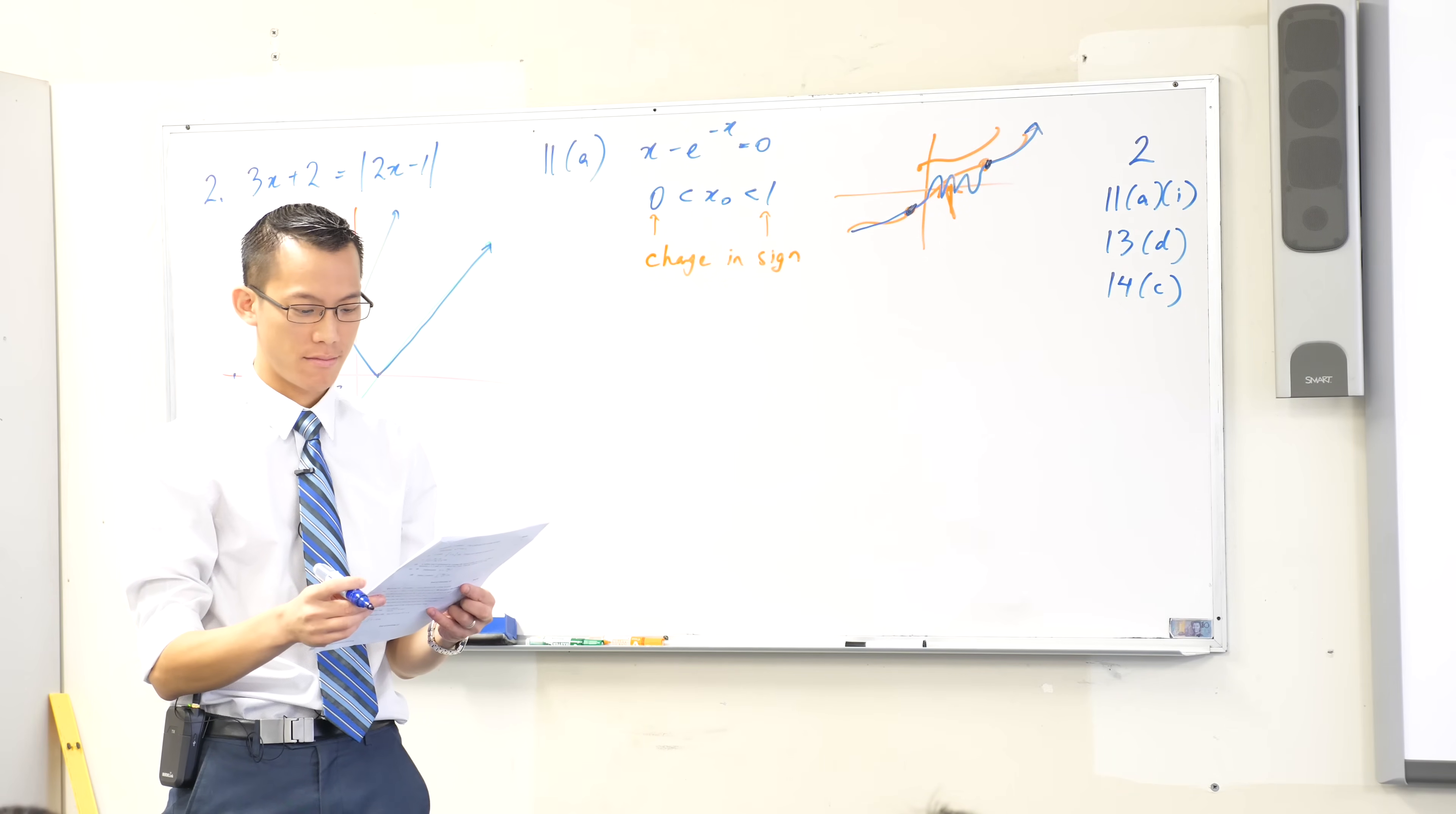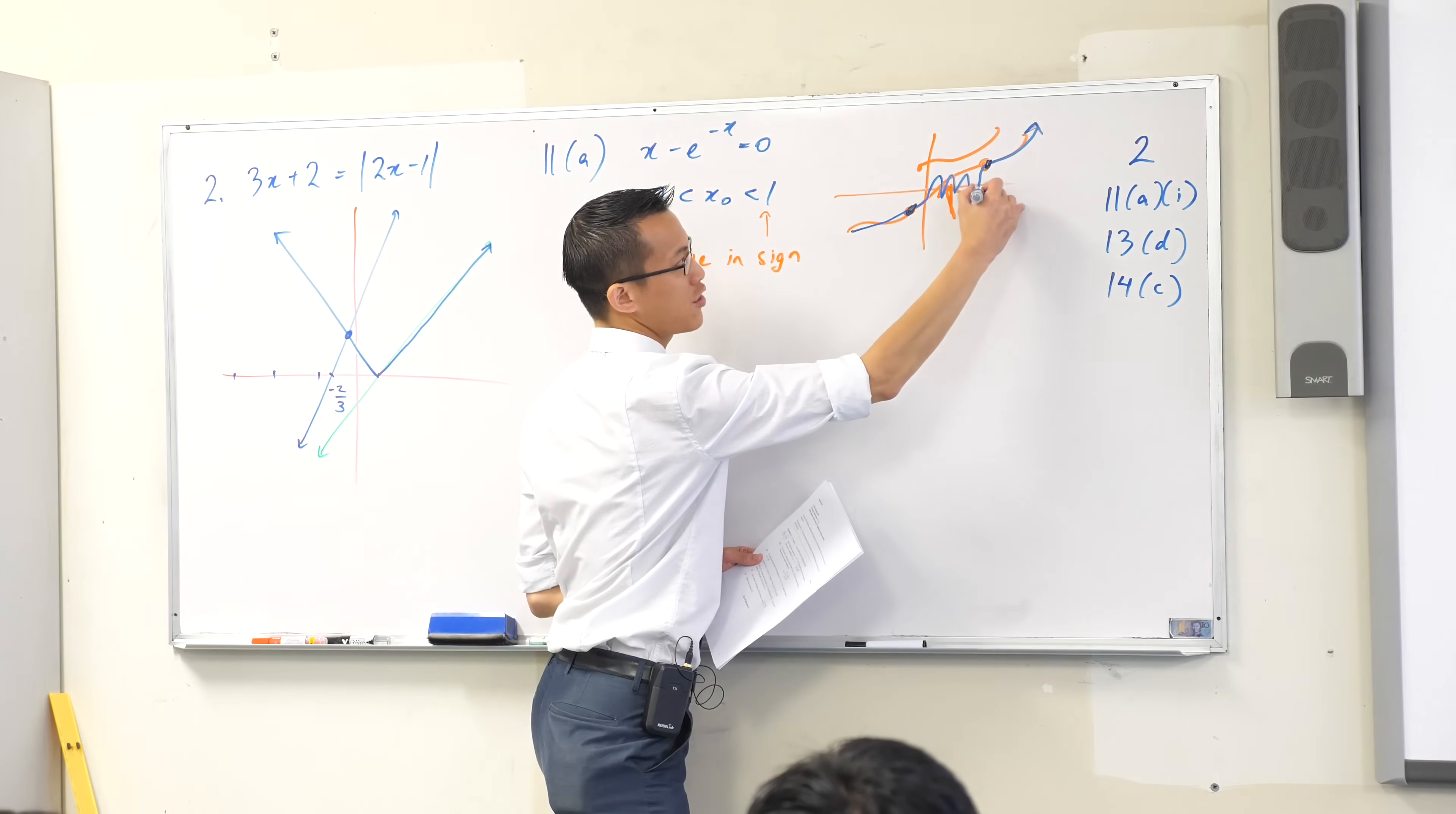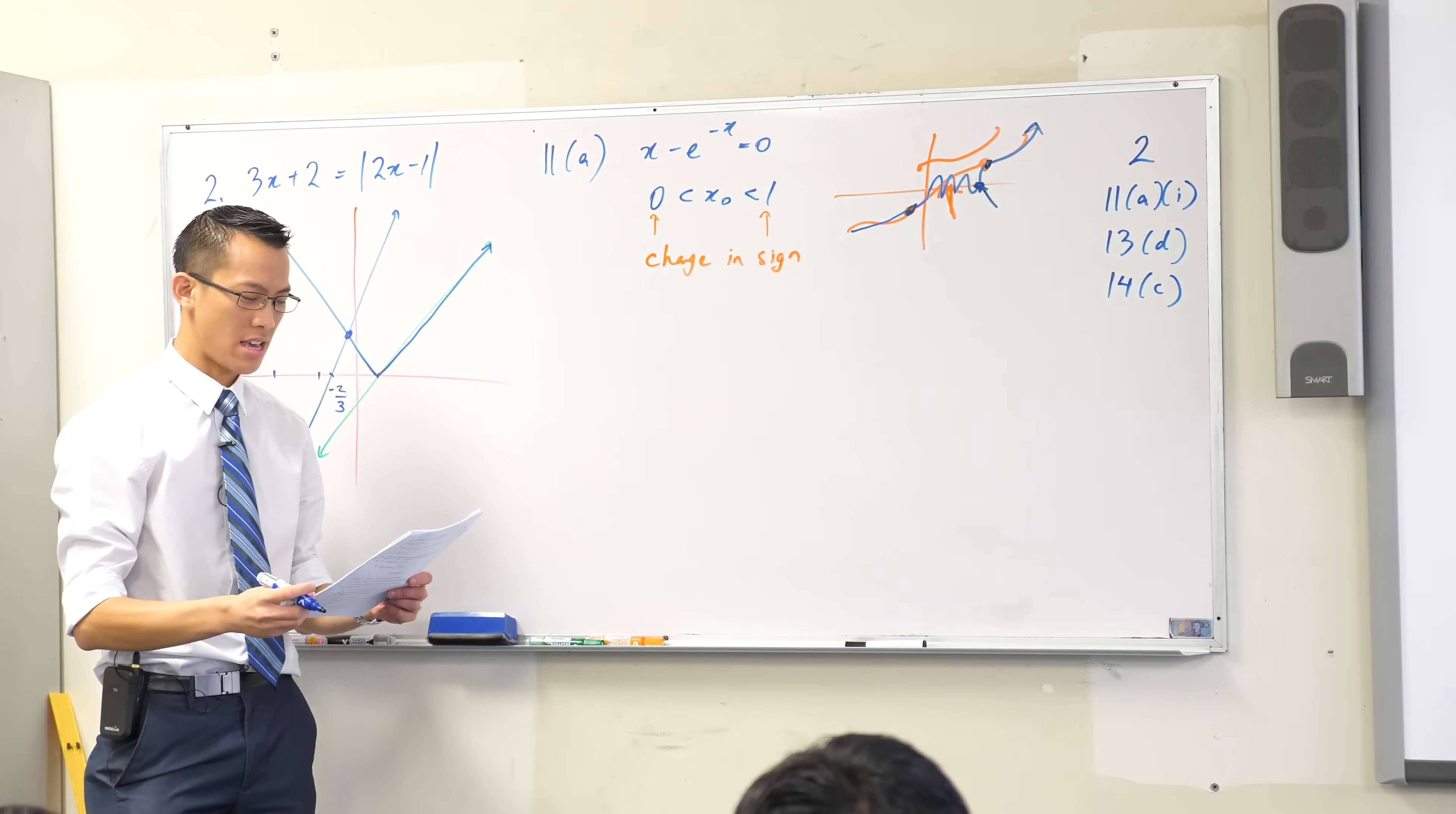I've shown there's a root, but I haven't shown there's... I heard it. I haven't shown there's exactly one root. I've shown that there's a root somewhere, but there might be others. So what could I do to show that there's only one, that there's exactly one?